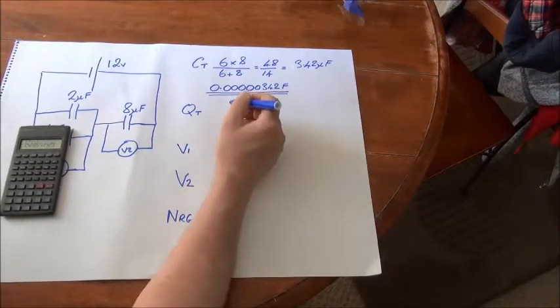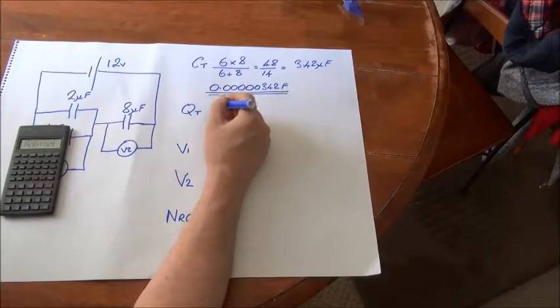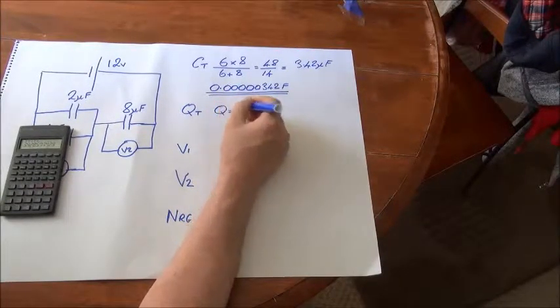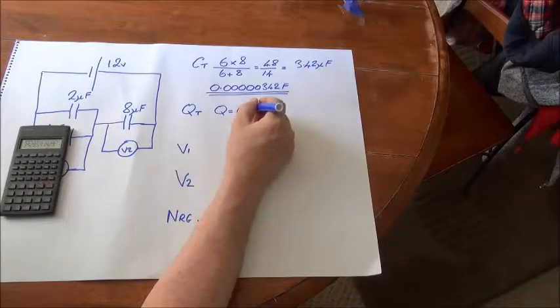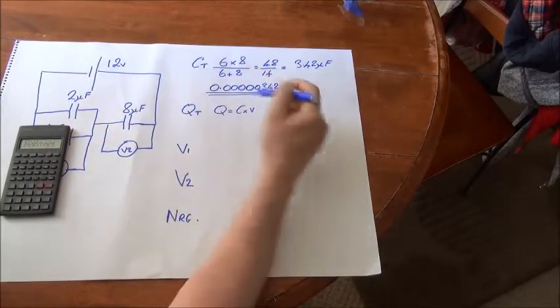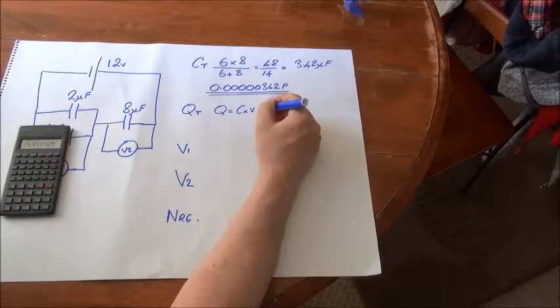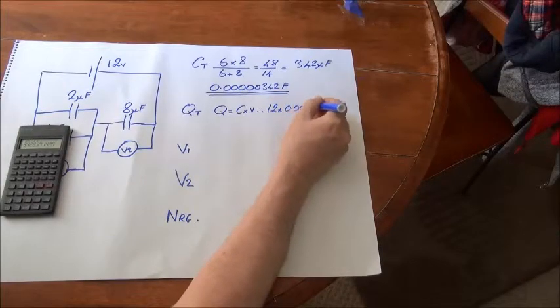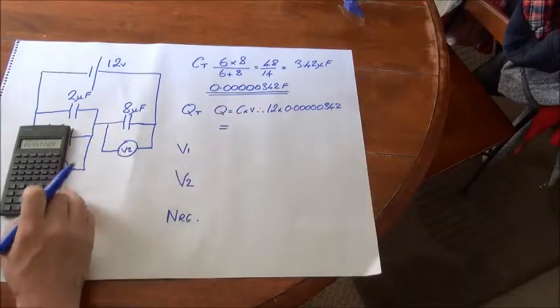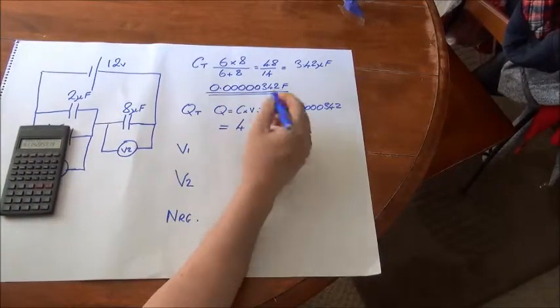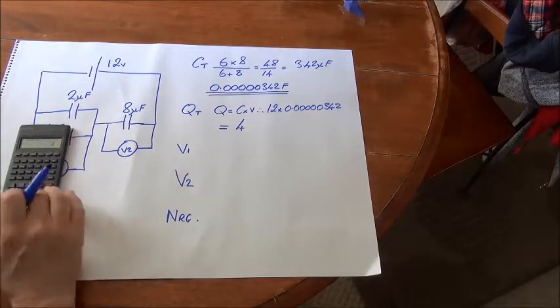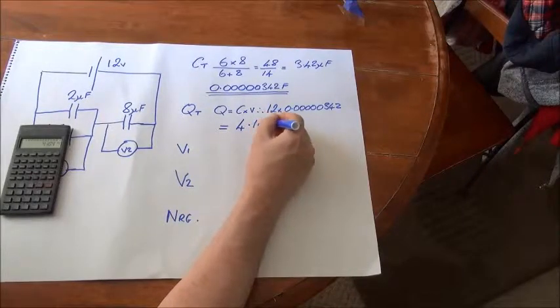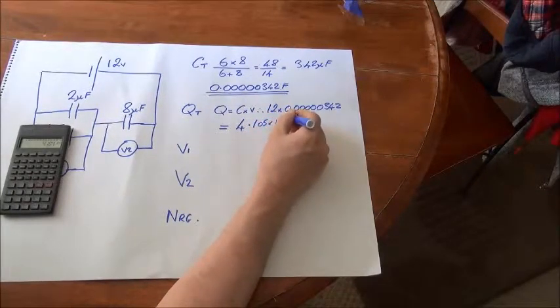Charge, we know from previous videos, is Q equals C times V, and we've got a voltage of 12 volts here. So therefore, 12 times 3.42, times 10 to the minus 6, equals 4.105 times 10 to the minus 5 coulombs.